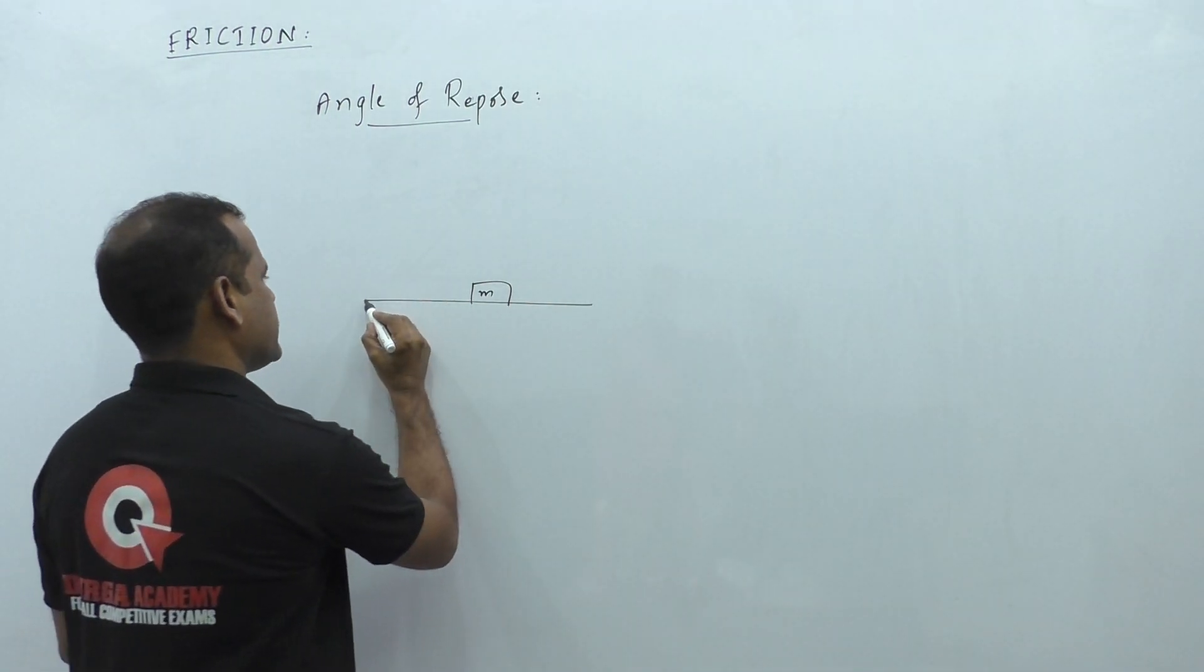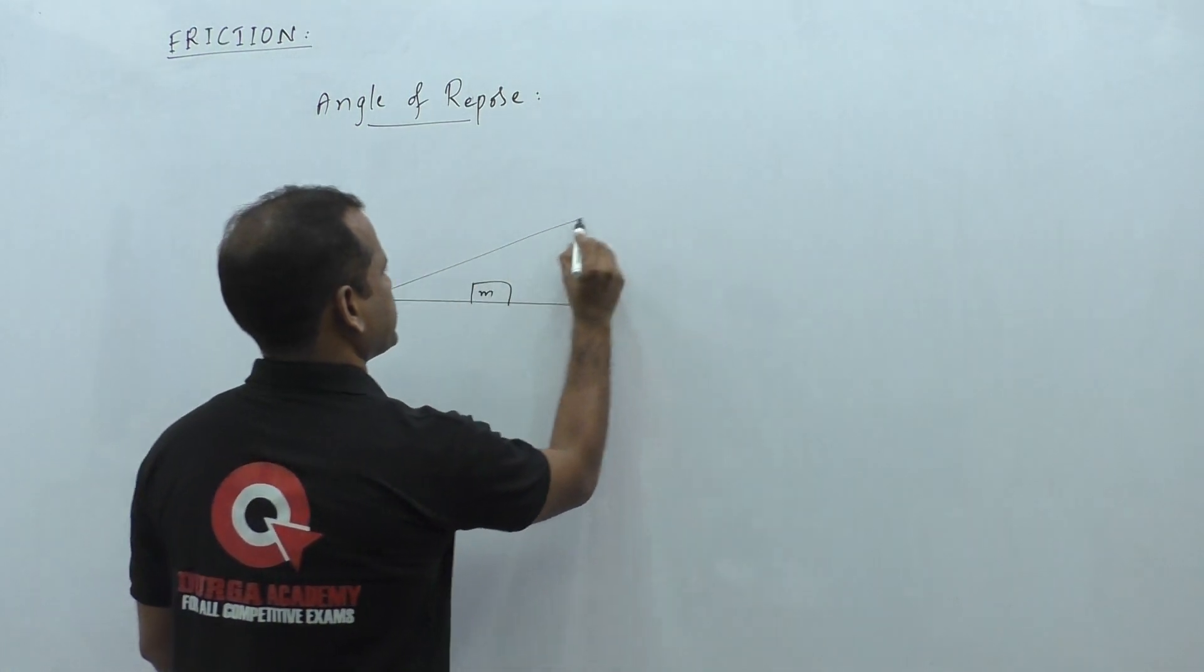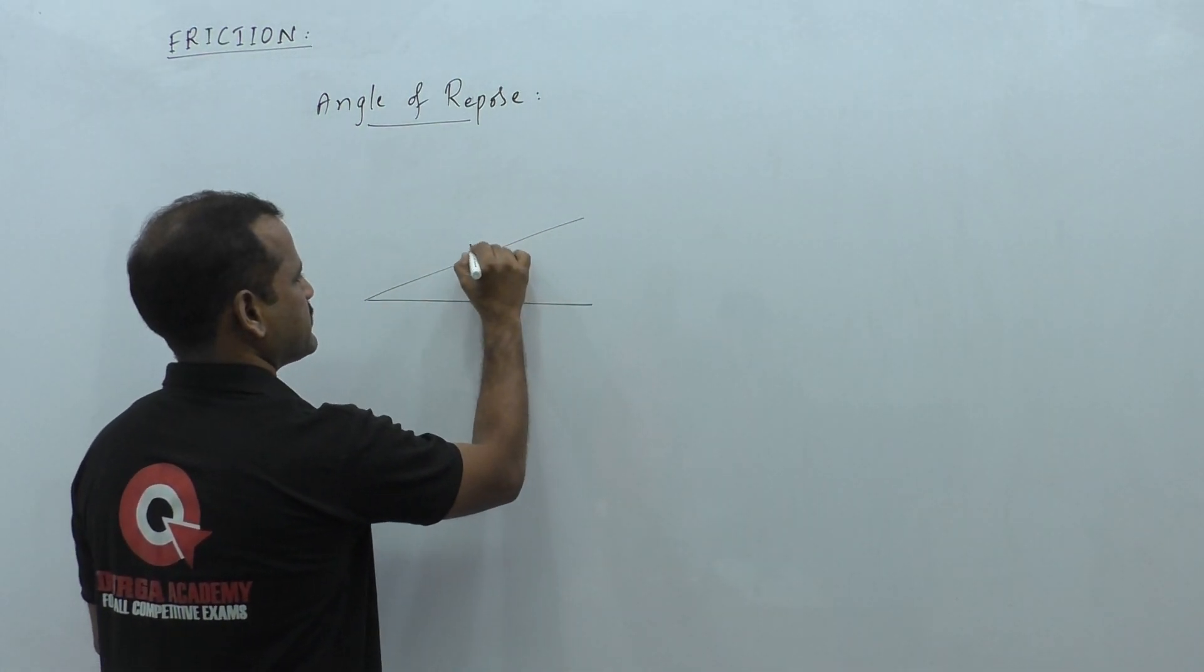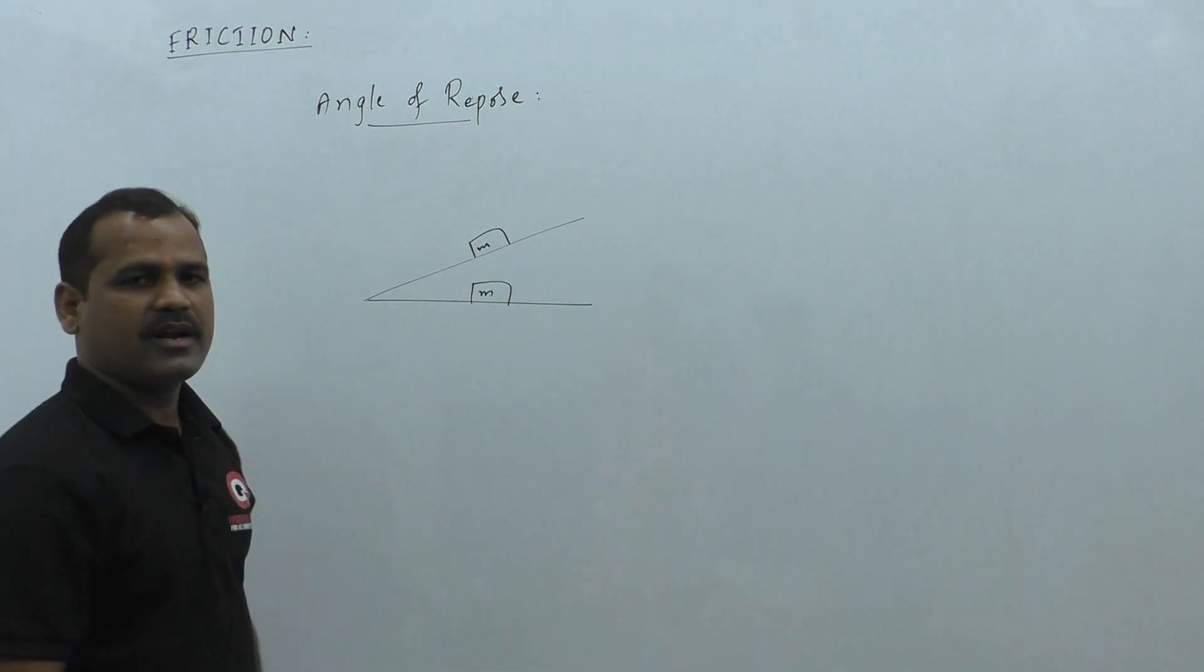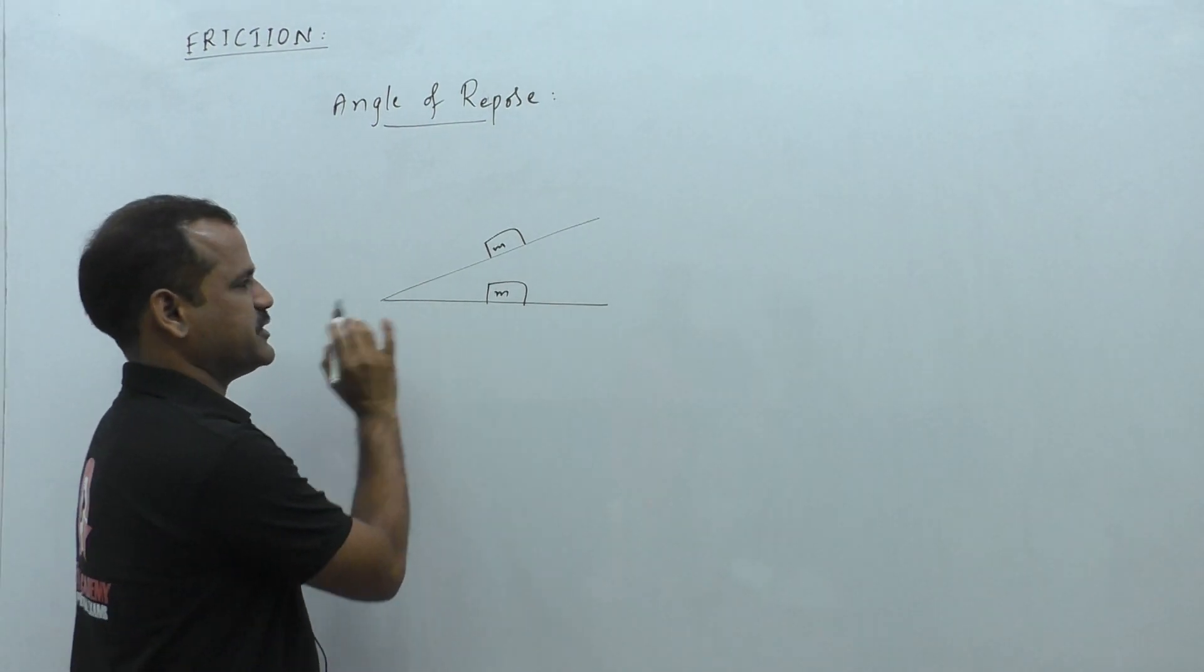If this object is kept on an inclined plane, observe that this object is kept on an inclined plane. This is making some angle with the horizontal.